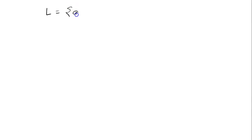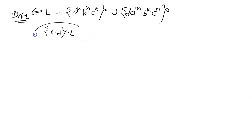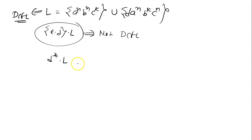Now let's look at Kleene star. We take the same language L: a^n b^n c^k union a^n b^k c^n, which we have already seen is a DCFL language. Consider d* · L. Think about whether this is DCFL or not — you can pause here. You will find that d* · L is also not DCFL.